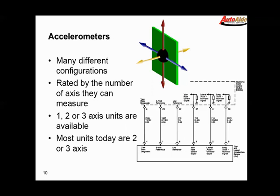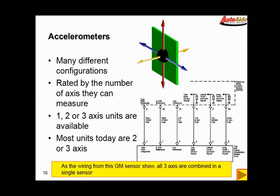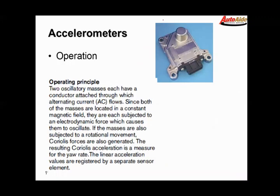If you take a look at the picture at the top of the page, you can see a three-axis accelerometer. This guy is capable of measuring all vehicle angles all at the same time. If you take a look at the wiring diagram to the right here on this GM accelerometer, you can see that it's a single unit and it's looking at all three vehicle axes at the same time. This is a three-axis accelerometer where all the measurements are done by one unit.